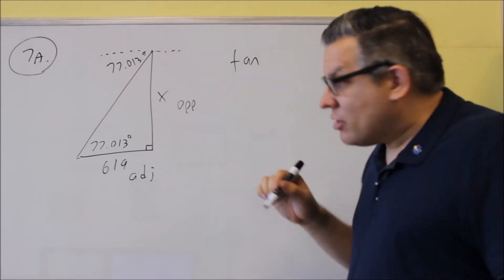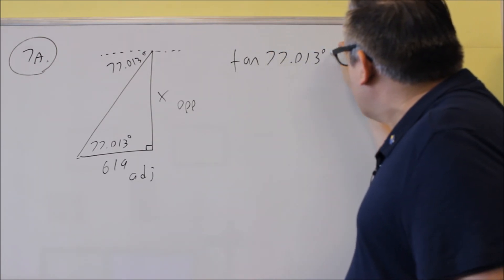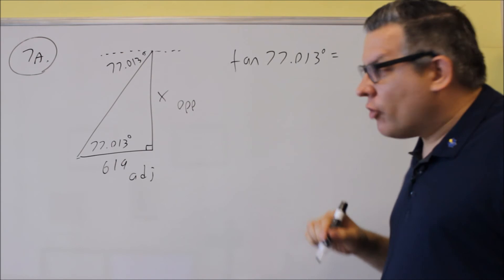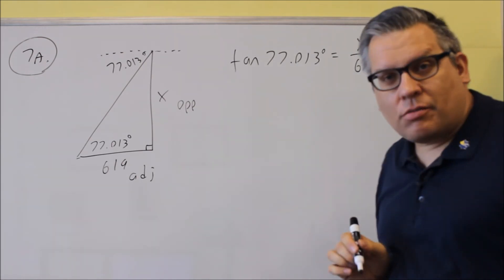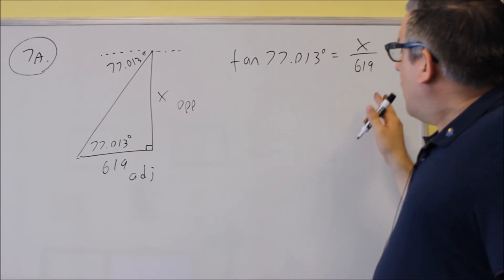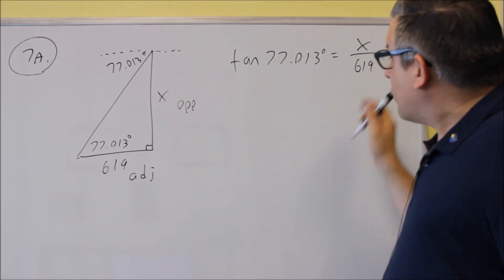In this case, we're going to use tangent 77.013 degrees equals opposite over adjacent, x over 619. So now that we have this, we want to solve for x.